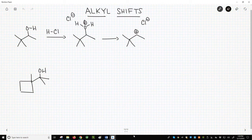On the screen, we have an alcohol reacting with HCl. The alcohol is protonated to form water on the side of our molecule. With a little heat, the water might leave to form a carbocation.